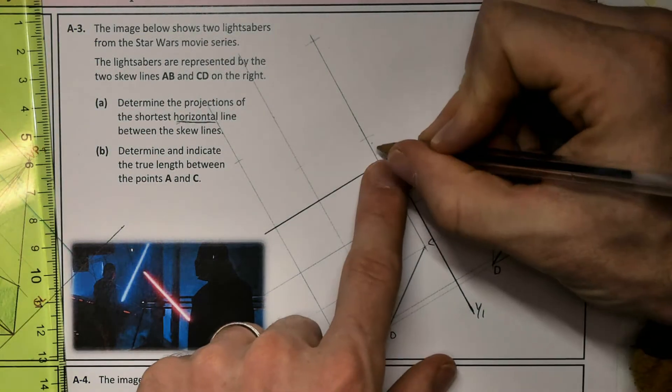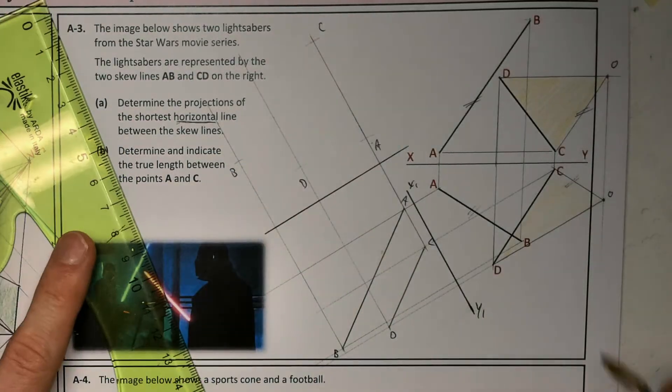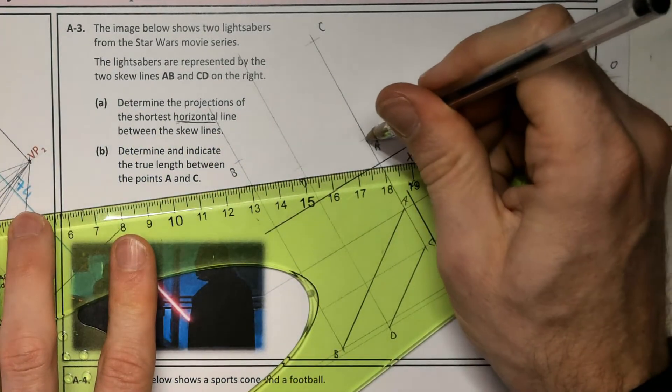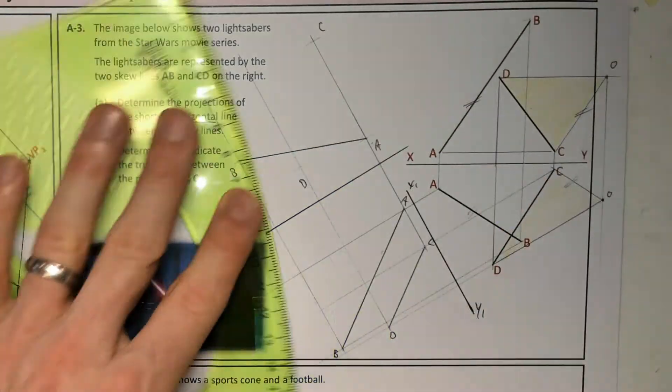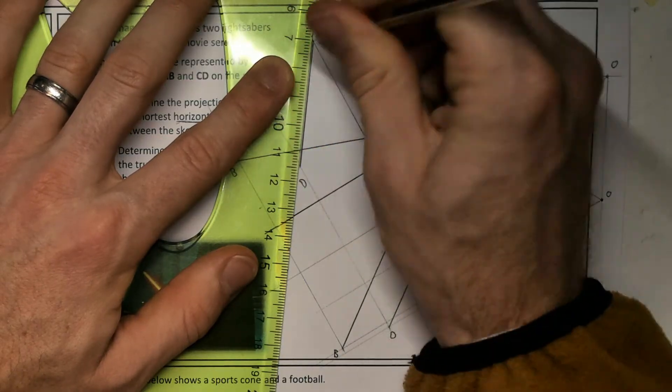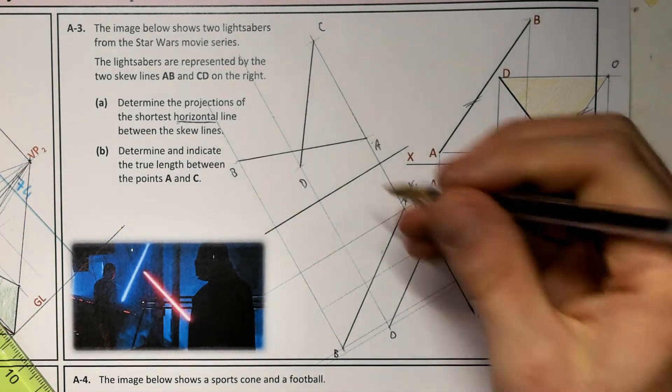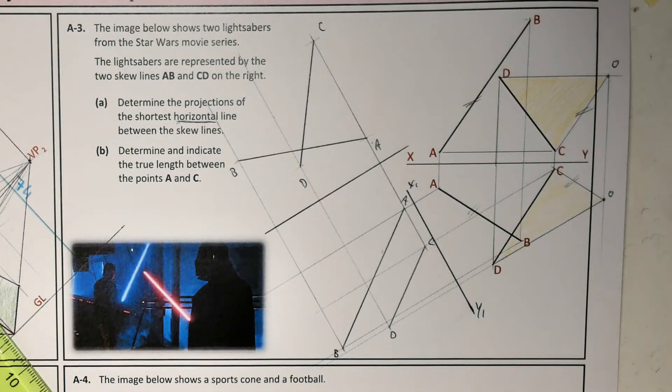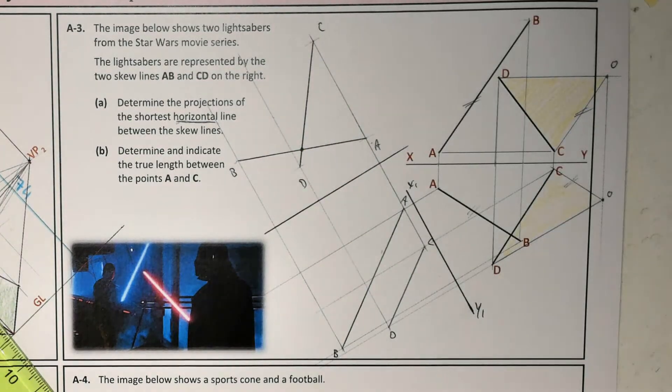Okay, so we've got A, C, D, B. A joins to B. C joins to D. So there are my skew lines. Here is the point view of the shortest horizontal distance. Let me indicate that. Here's a point view of the shortest horizontal distance.